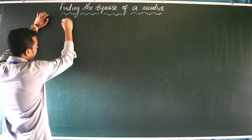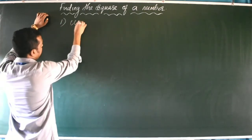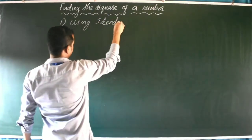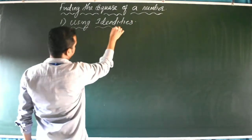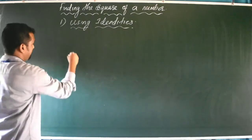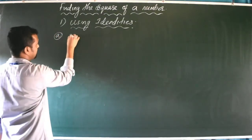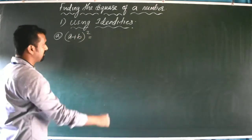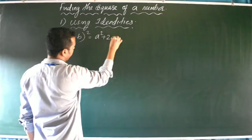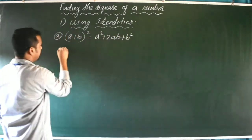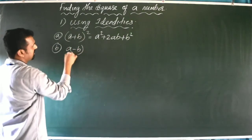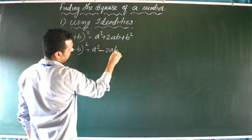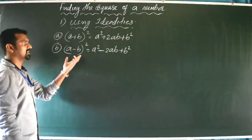The first method is using identities. We can find out the square of a number using two identities: (a + b)² and (a - b)². The expansion of (a + b)² is equal to a² + 2ab + b², and (a - b)² is equal to a² - 2ab + b².